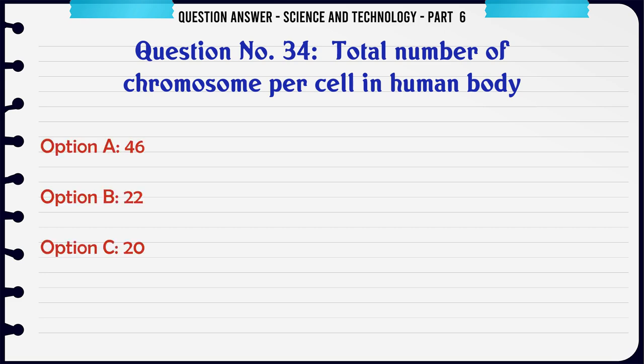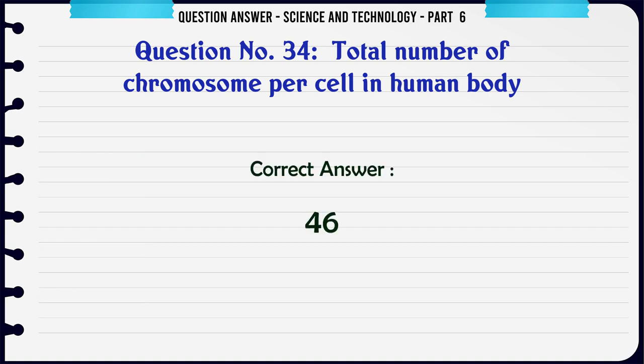Total number of chromosomes per cell in human body. A. 46. B. 22. C. 20. D. 36. The correct answer is 46.